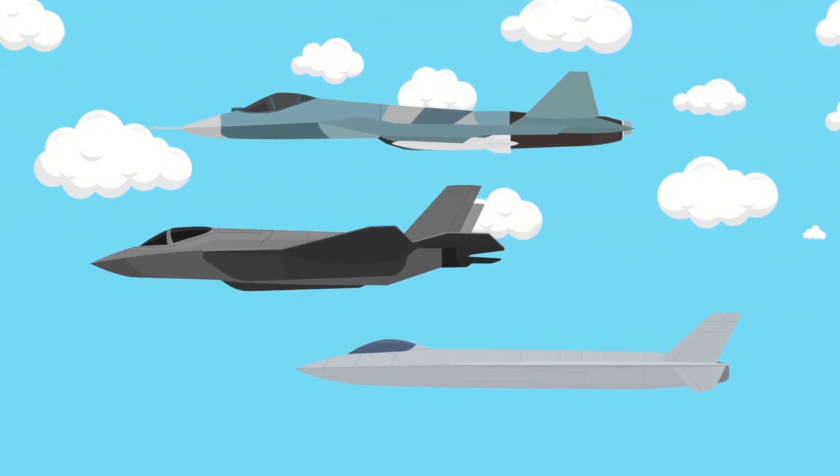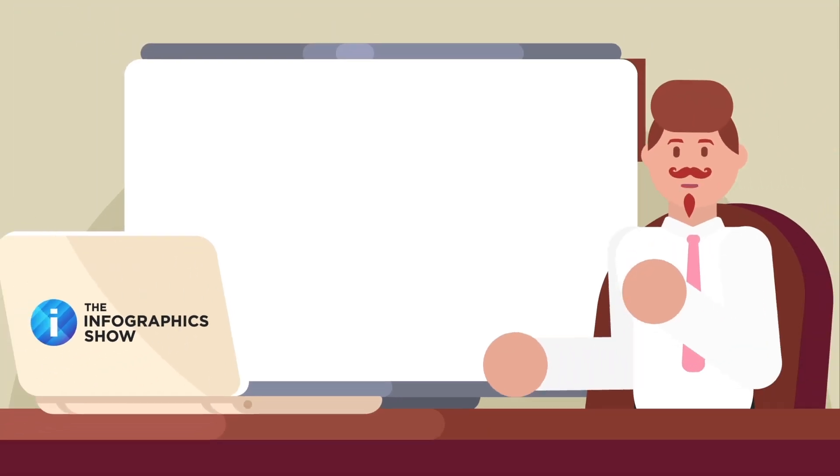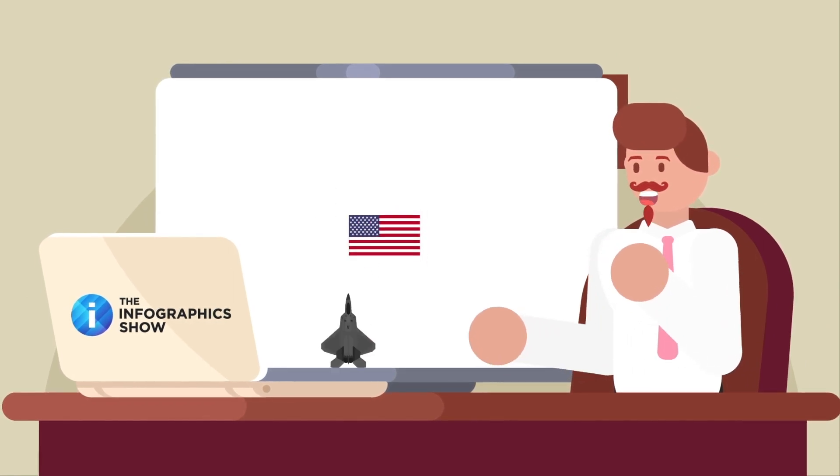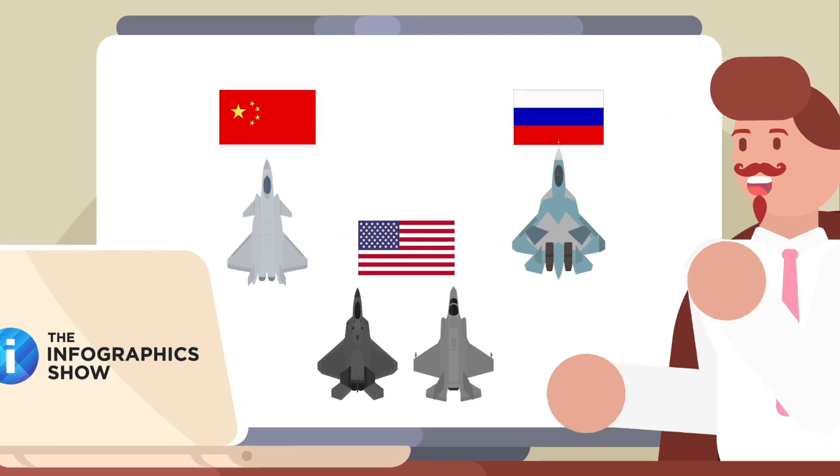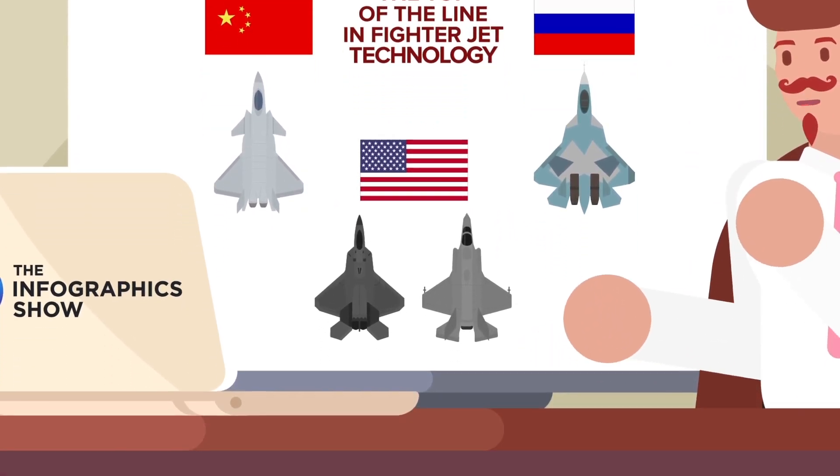The world's superpowers are currently embroiled in a heated race for total air dominance. Fighter jets in use around the world today, like the US's F-22 and F-35, China's J-20, and Russia's Su-57 are currently the top of the line in fighter jet technology.